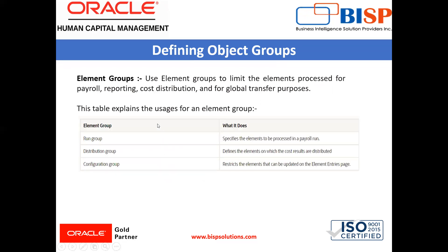Let's understand these groups. Element group: use an element group to limit the elements processed for payroll reporting, cost distribution, and global transfer purposes. The run group specifies the elements to be processed in a payroll run, and the distribution group defines the elements on which cost results are distributed. Last is the configuration group, which restricts the elements that can be updated on the element entries page.